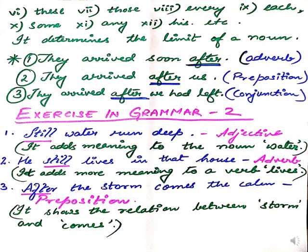I hope this explanation is clear. Now we are going to solve exercise in grammar 2, which is given on page 12 of your language book. Some I have done and some you have to do as homework. The first one is 'still water run deep.' You have to identify the italicized word, name which part of speech it is, and give the reason for your classification. Here 'still' is an adjective — it adds more meaning to the noun 'water.'